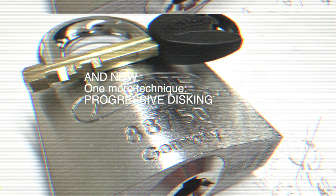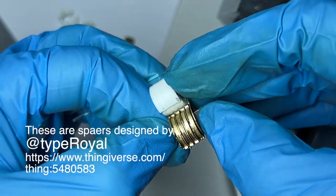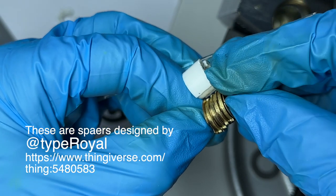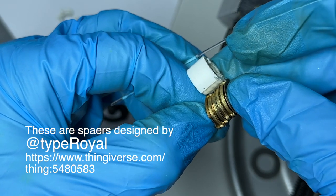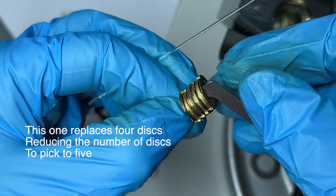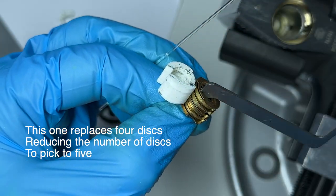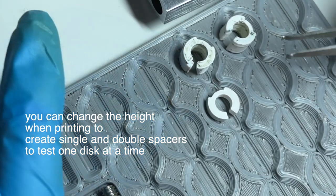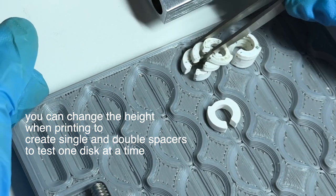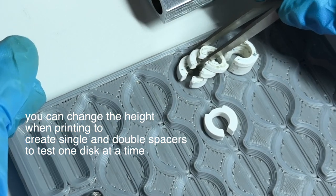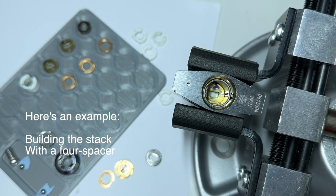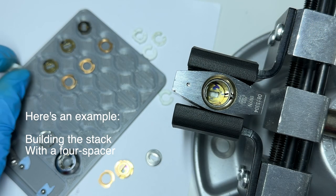Now, one more technique to take a look at to make progress with this particular lock is to use spacers. TypeRoll has created some printouts of great spacers for progressive disking, if you will, disk detainer locks. This one is a four spacer. You can also chop the height of the spacer down so that you can create twos and ones spacers. Here's an example.